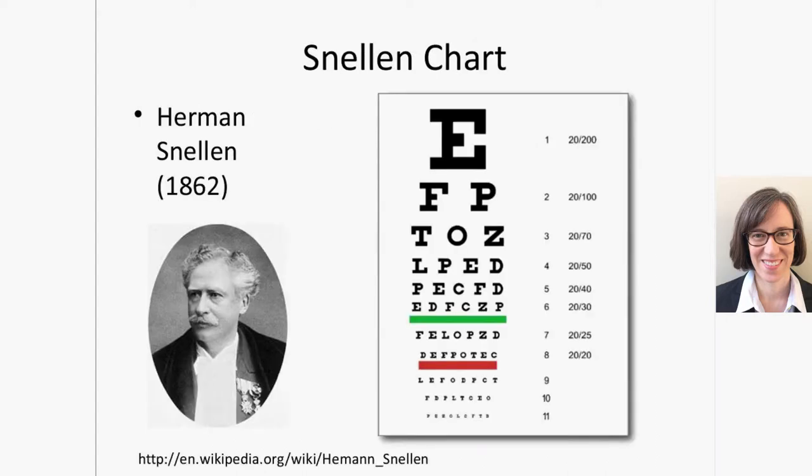Snellen was a Dutch ophthalmologist who lived in the 19th century. He came up with the Snellen chart in which letters get progressively smaller as you go down the chart. For example, if you can only see the E, you would have 20/200 vision, whereas if you could read the entire line of letters above the green line, you'd have 20/30 vision. You'll still find this chart in doctor's offices all over the country.